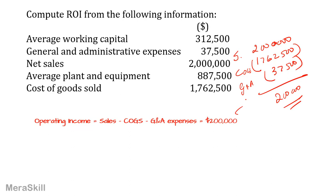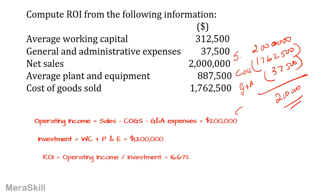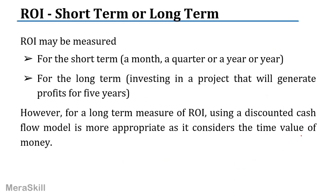Now, what is the investment in the business? Working capital of 312,500 plus plant and equipment of 887,500 equals 1,200,000. So the return on investment is operating income of 200,000 divided by investment of 1,200,000 into 100, which equals 16.67%.